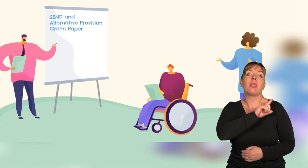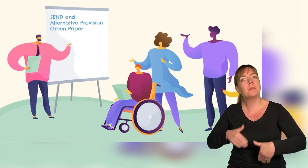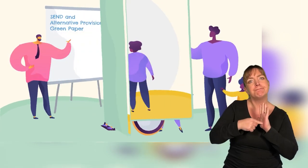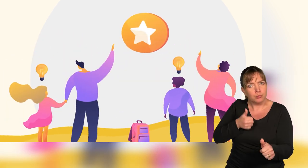That is why, in March 2022, we published the SEND and Alternative Provision Green Paper. This set out proposals to provide all children and young people with SEND, and in Alternative Provision, with the support they need to thrive.